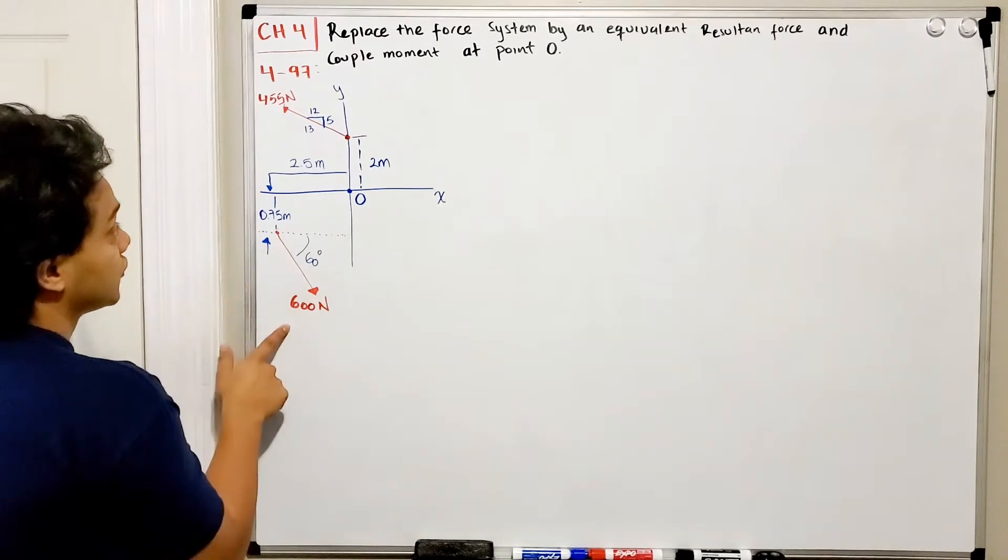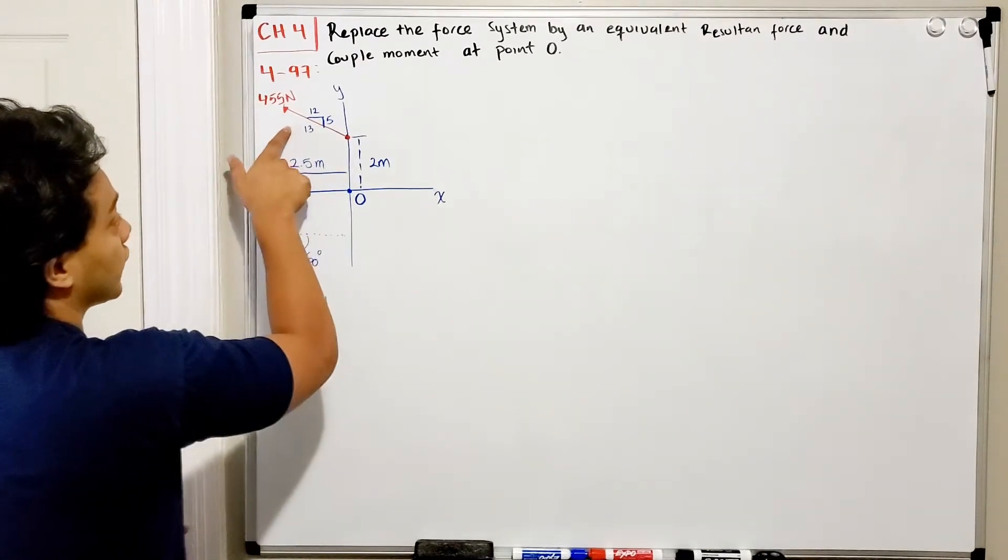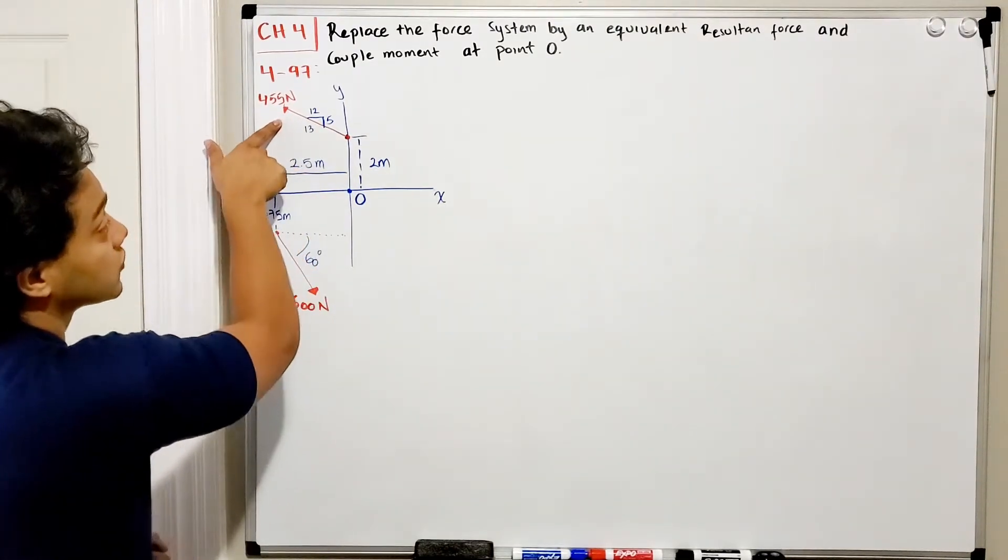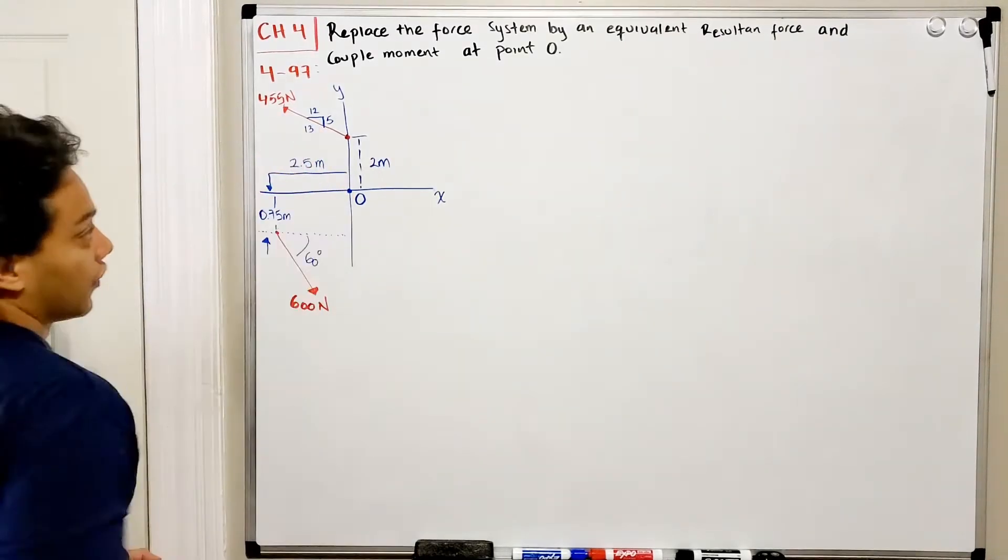So we've got these two forces: 600 N going down and to the right, and 455 N that is described by a similar triangle.